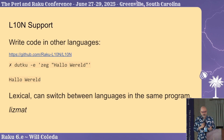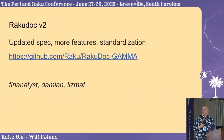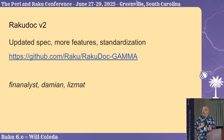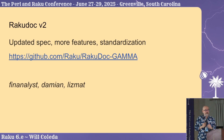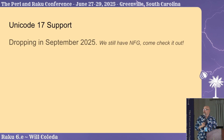The AST was the biggest thing — I'll speed through everything else. There's going to be a new version of RakuDoc. In Perl you have POD; this is an updated version of the spec — it's had a lot of feedback from Damien, so there are cooler features. Most of this is already implemented. We will have Unicode 17, which will drop in September.